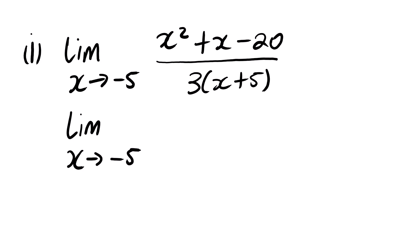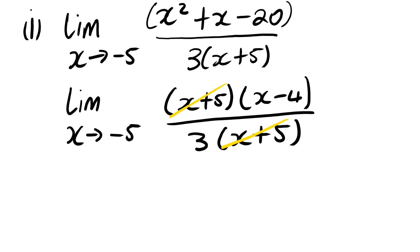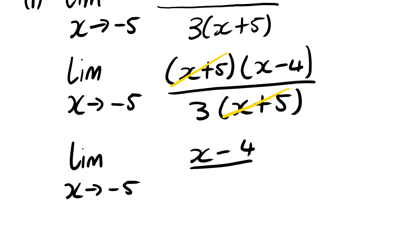So the first step that we need to do is factorize. The factors of this function give us x plus 5 times x minus 4, all over 3 times x plus 5. From here, the common binomial x plus 5 in the numerator and denominator will cancel to result in 1. We are then left with the limit as x approaches negative 5 of x minus 4, all over 3.